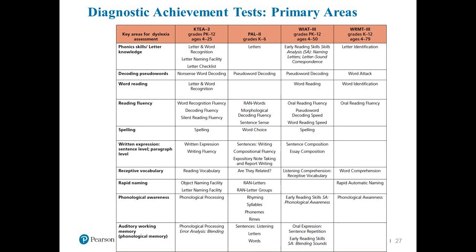You can contribute to this battery using more than one test. A lot of times I like to pull tests from different batteries — I might pull out the KT-3 because it's more comprehensive, then pull in the WRMT-3 because it's a specialized reading assessment. I may also pull in the Process Assessment of the Learner because Virginia Berninger has a significant processing component built into her test. If you think about this as a toolkit, you can pull in multiple assessments to address each of these areas, but it's important you account for each area as developmentally appropriate.